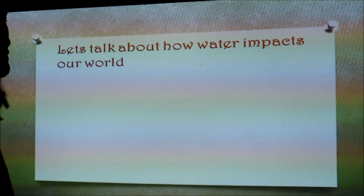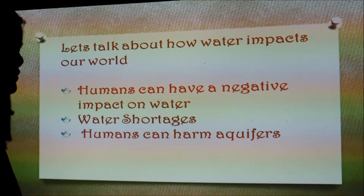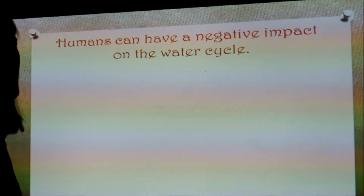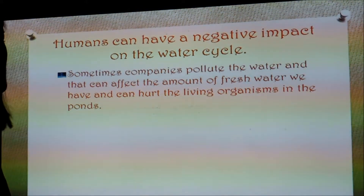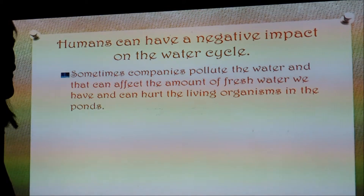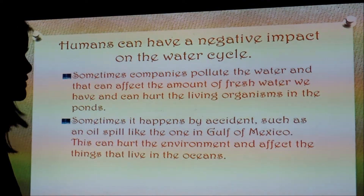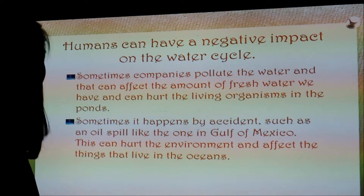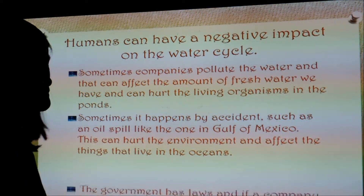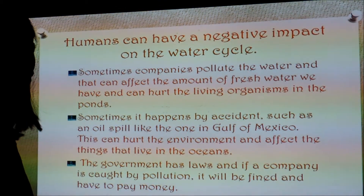Let's talk about how water impacts our world. Humans can have a negative impact on water. Sometimes companies pollute the water, and that can affect the amount of fresh water we have and hurt the living organisms in the ponds. Sometimes it happens by accident, such as an oil spill like the one in the Gulf of Mexico, which can hurt the environment and affect the things that live in the oceans. The government has laws, and if a company causes pollution, it will be fined and have to pay money.